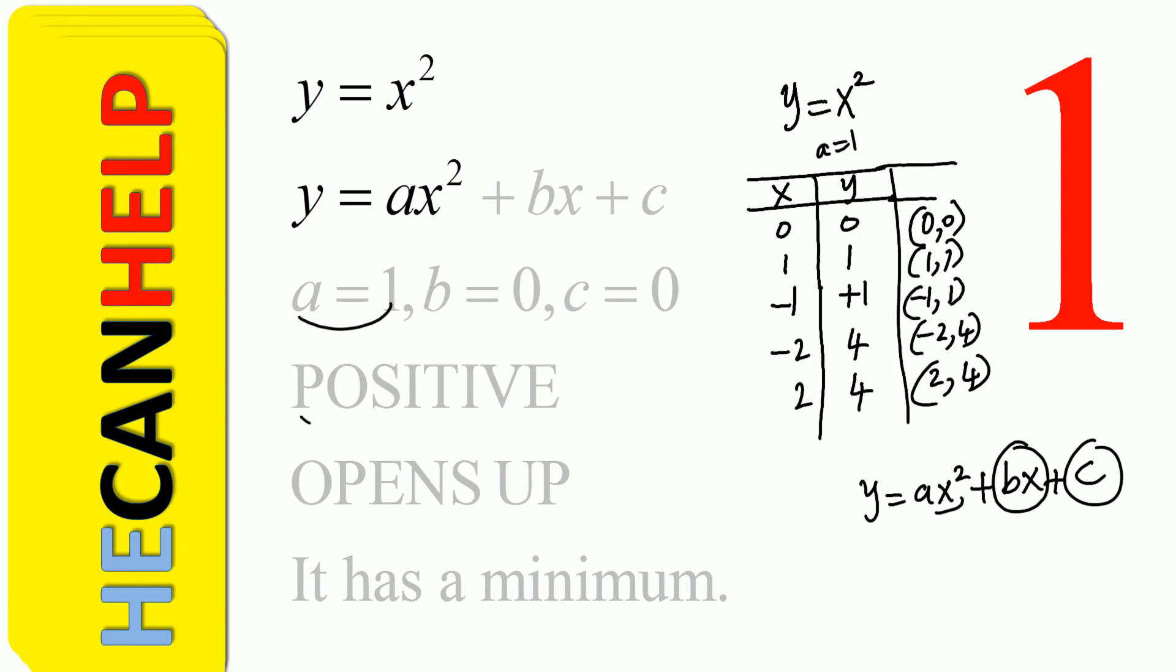When nothing is written next to x squared of 2, a is 1. So a is 1. a is positive 1. It is positive, the graph opens up, it has a minimum. Why do we say we have a minimum when the graph opens up?